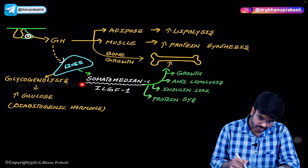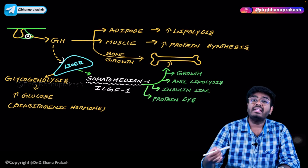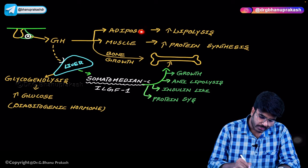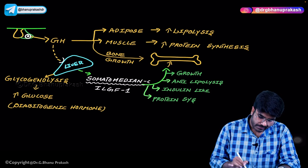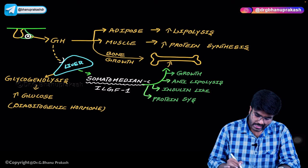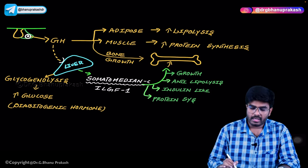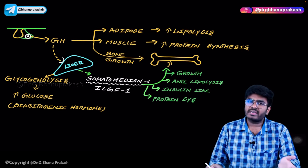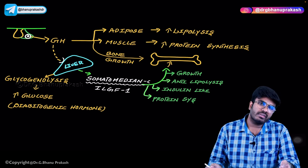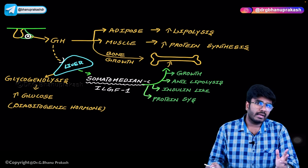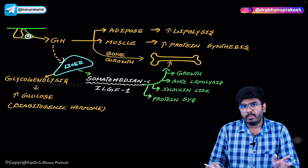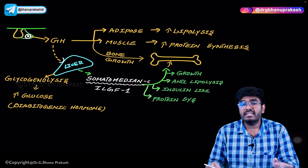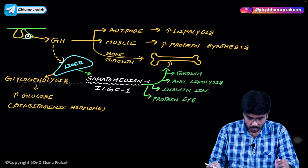However, there is a key difference regarding lipids. The direct action of growth hormone on adipocytes is lipolysis. But somatomedin C is anti-lipolytic — it has actions similar to insulin and inhibits fat breakdown. So on proteins, both direct and indirect actions produce the same result (protein synthesis), but on lipids, direct GH causes lipolysis while somatomedin C is anti-lipolytic.